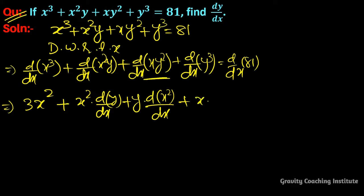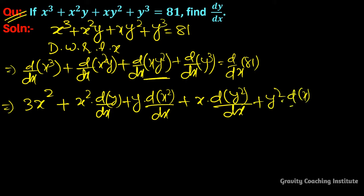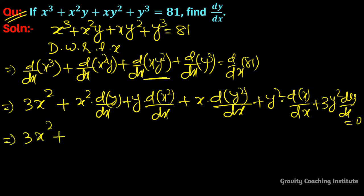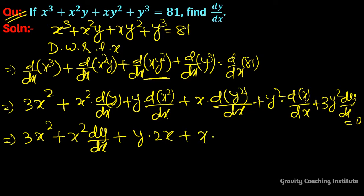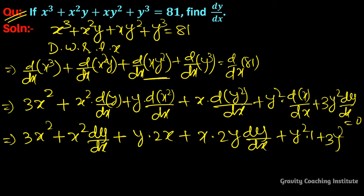Plus y² into derivative of x plus x into derivative of y² plus 3y² dy/dx equals 0. So we get 3x² plus x² dy/dx plus 2xy plus x times 2y dy/dx plus y² plus 3y² dy/dx equals 0.